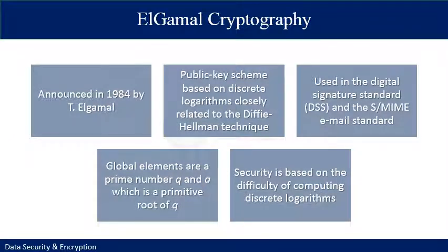The second algorithm in discussion is ElGamal, announced in 1984 by T. ElGamal. It is based on public key scheme using discrete logarithms, closely related to Diffie-Hellman. It is used in the digital signature standard and the S/MIME email standard. The global elements are prime number Q and a primitive root alpha of Q. Security is based on the difficulty of computing discrete logarithms.